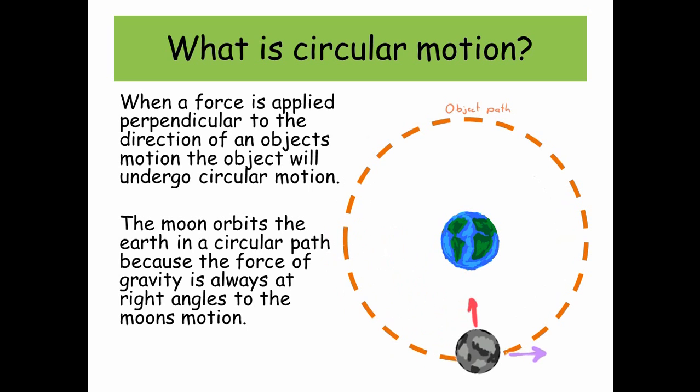We can see the red arrow - that's the direction of the force, the force vector always acting towards the earth. And the direction of velocity, the purple arrow, is always 90 degrees to the direction of the force. This is why we get circular motion.